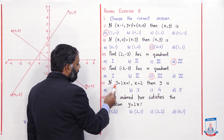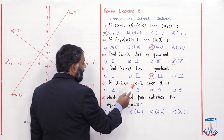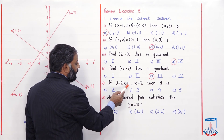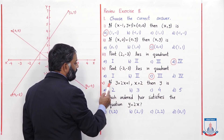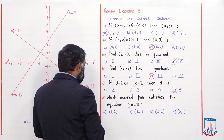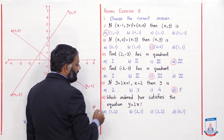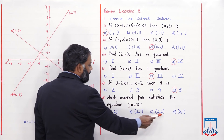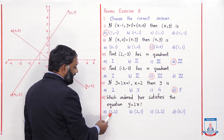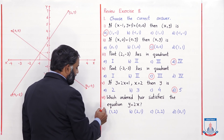Fifth MCQ: if y = 2x + 1, x = 2, then y is? y = 2(2) + 1 = 4 + 1 = 5, जो option D में लिखी है — option D correct। Last MCQ: which ordered pair satisfies y = 2x? First ordered pair में x = 1, y = 2 — x की जगह 1 put करें तो y = 2×1 = 2 — equation satisfy होती है, option A correct।